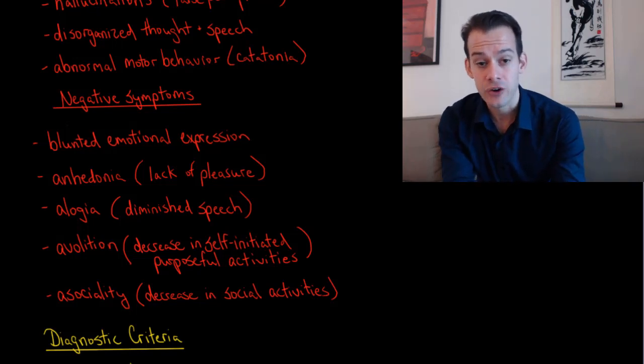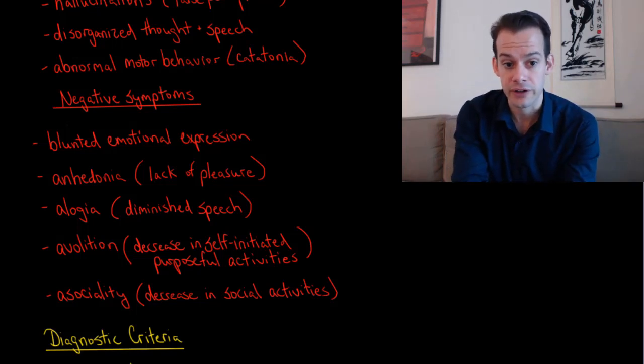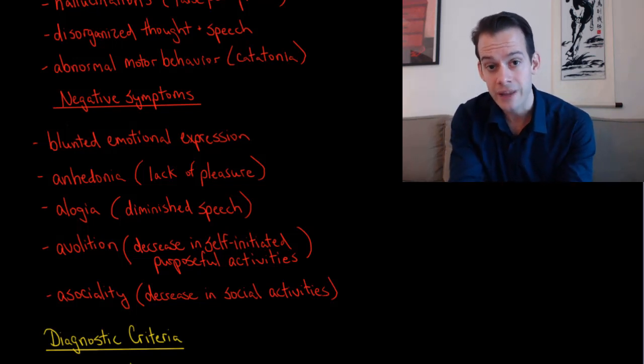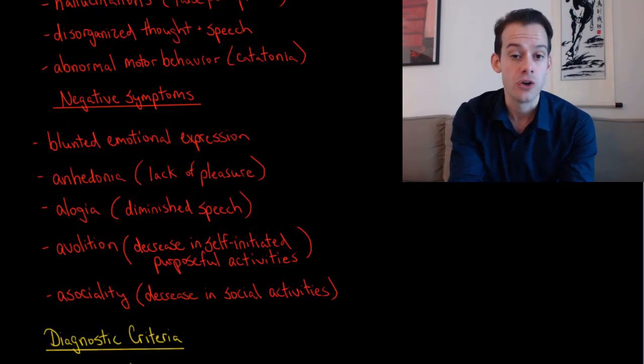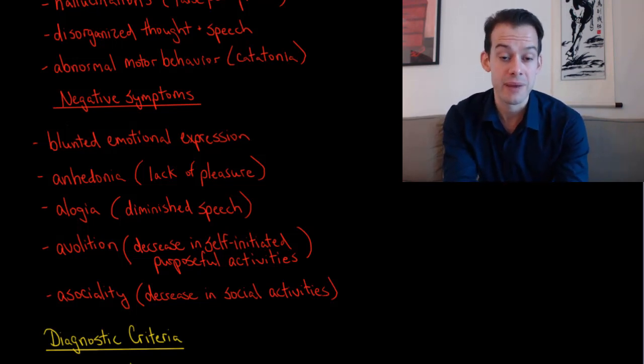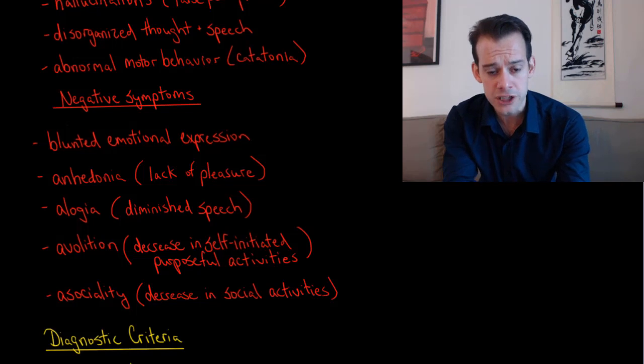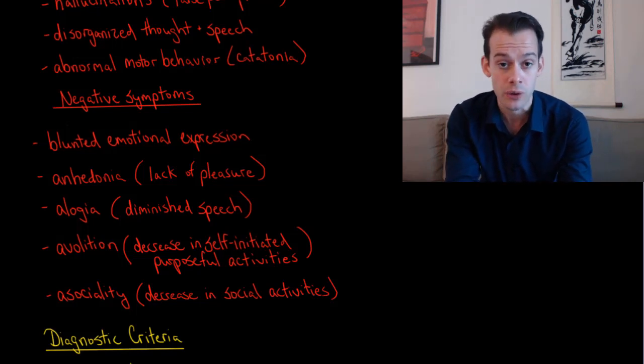We also see anhedonia, which is common in a number of mental illnesses and refers to a lack of pleasure. Things that the patient used to enjoy, things that used to bring them pleasure, no longer do. Then we see alogia, which refers to diminished speech. In extreme cases this can be mutism where they don't speak at all or it could just be reductions in their usual amount of speech.